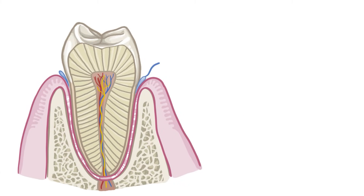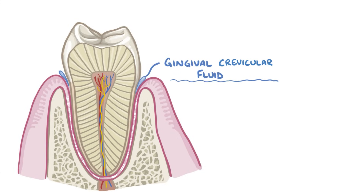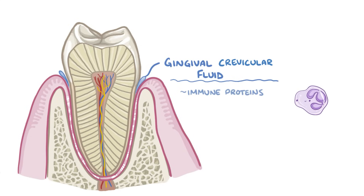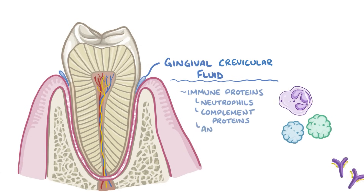A watery substance called gingival crevicular fluid flows into that space in small amounts. Gingival crevicular fluid contains various immune proteins and cells like neutrophils, complement proteins, and antibodies.